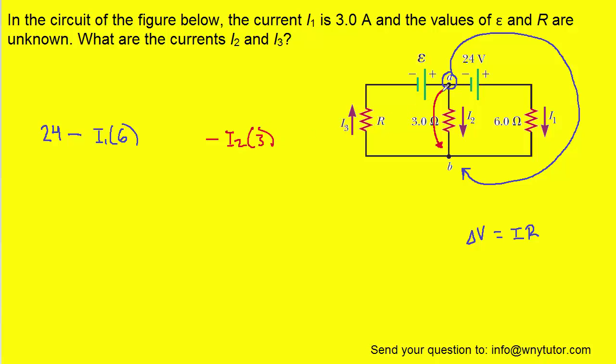The key idea is that the potential change along the red path is equal to the potential change along the blue path. So we can actually set these two potential changes equal to one another. The value of I1 was given in the question as 3 amps, so we can plug that in. Then on the left side, we have 24 minus 18, which of course is 6.